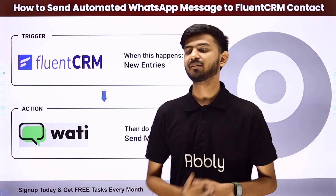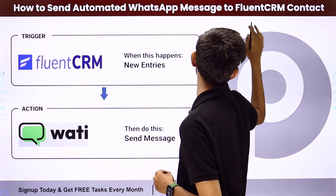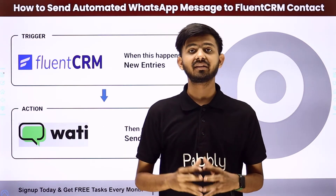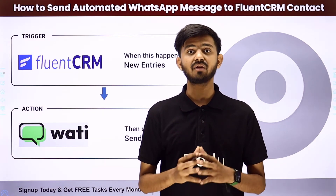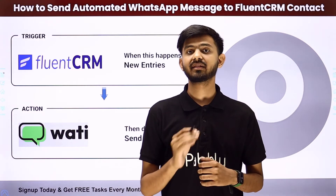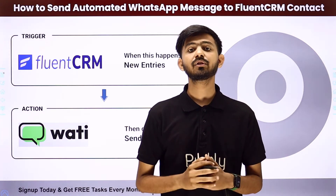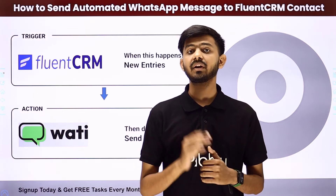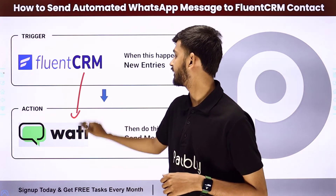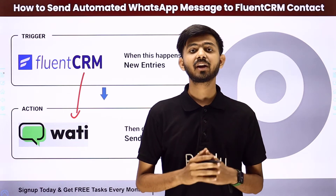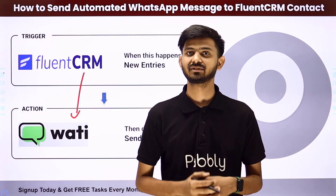Hello everyone. Today our topic is how to send automated WhatsApp messages to FluentCRM contacts. Our objective is that whenever we add a new contact in our FluentCRM account, we want to send an automated message on WhatsApp to that particular contact. Here we are going to use Vati and create an integration between FluentCRM and Vati using PabblyConnect, which is an amazing software for automation and integration.